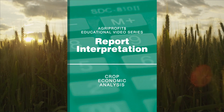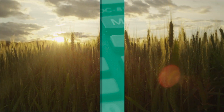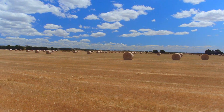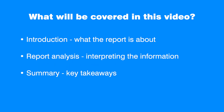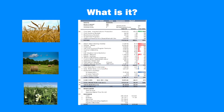This video explains how to read and interpret the AgriPROFIT's crop enterprise analysis using an example of the report. In particular, it explains what is covered by the report, why this is important, and how to interpret the report information. The video concludes with a summary of key takeaways and contacts for any further assistance.